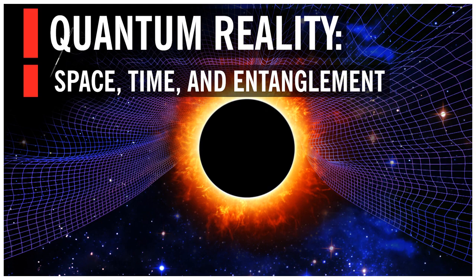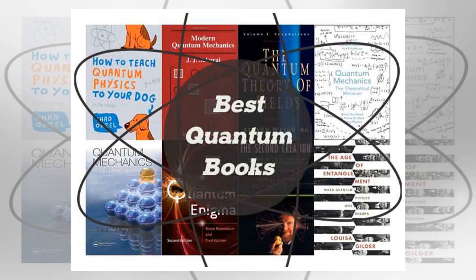But in quantum physics, it turns out three numbers isn't enough. Instead, you need an infinity of numbers, scattered across all of space, just to describe the position of a single electron.